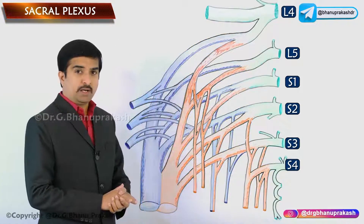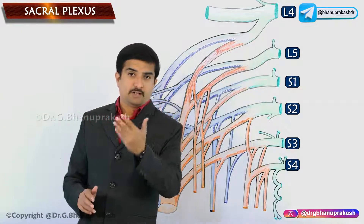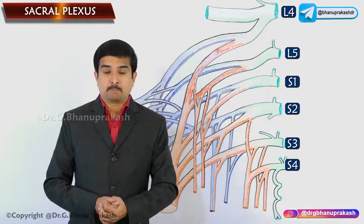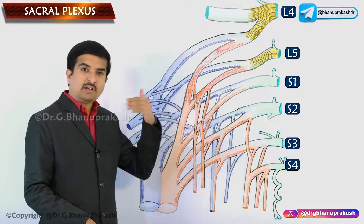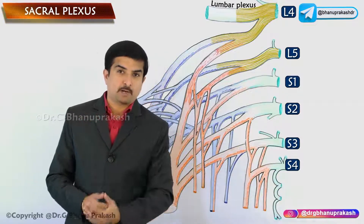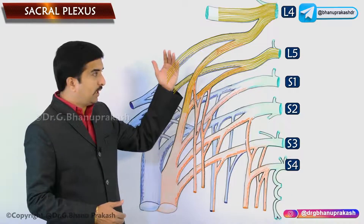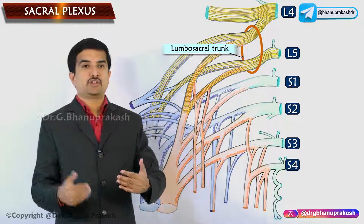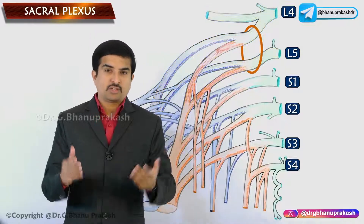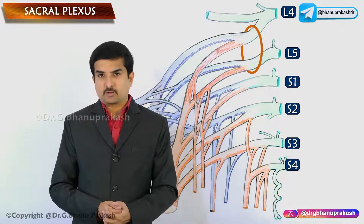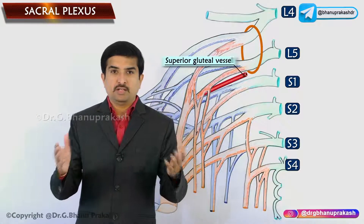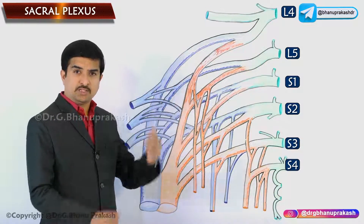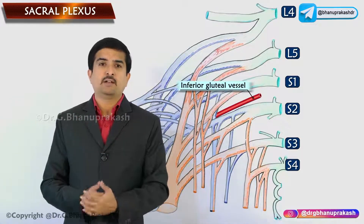The L4 nerve is shared by both the lumbar and sacral plexus. As discussed in the lumbar plexus, the larger upper part of L4 contributes to the lumbar plexus, while the smaller lower part joins the ventral ramus of L5 to form the lumbosacral trunk, which contributes to the sacral plexus. The lumbosacral trunk and ventral ramus of S1 are separated by the superior gluteal vessels, and S1 and S2 are separated by the inferior gluteal vessels.